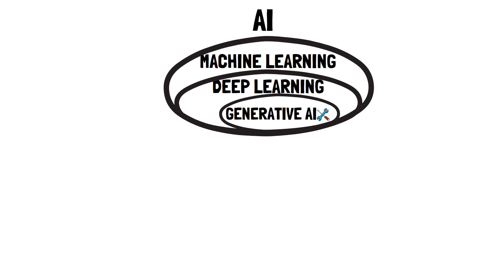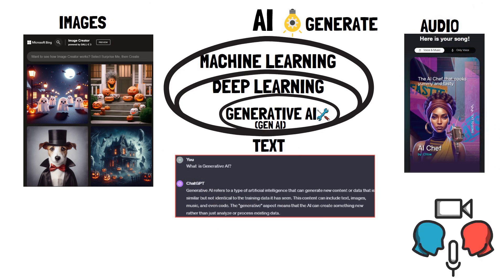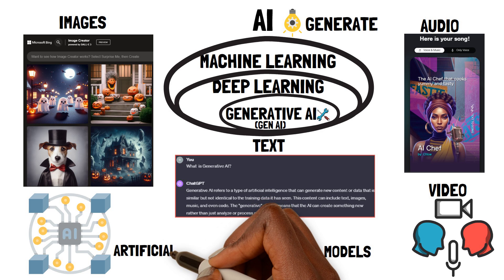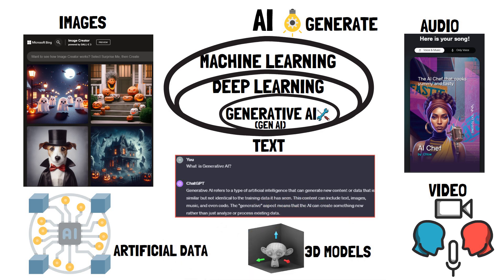Generative AI, or Gen AI for short, is a type of artificial intelligence that can generate high-quality text, images, audio, video, 3D models, and artificial data after learning from examples or input data.